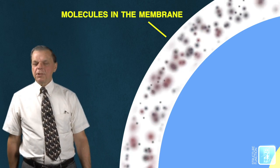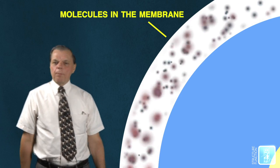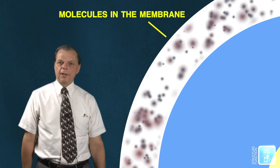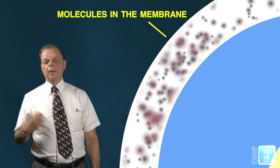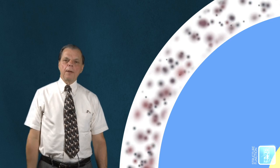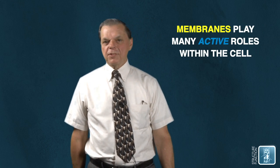One of the important functions is to identify a specific molecule it's interested in, in that flowing river, grab it, pull it into the cell. So membranes of cells are exceedingly important. They're not just passive barriers that keep things in and out, but they actually play many active roles in the cell.